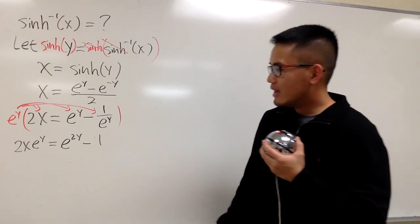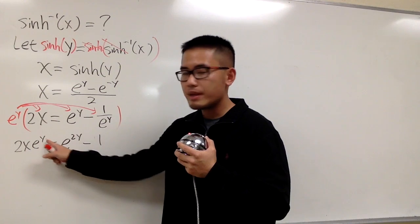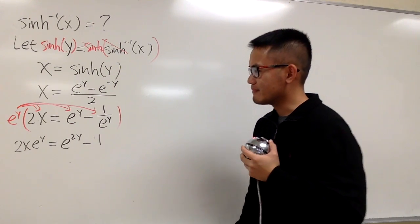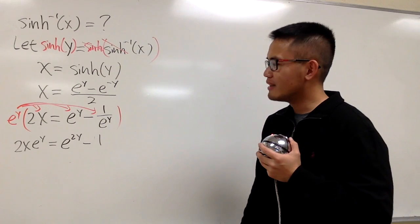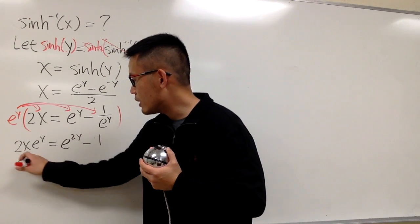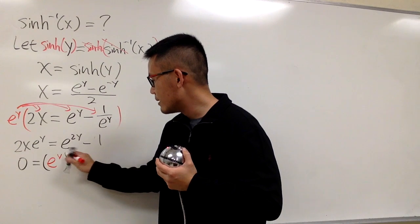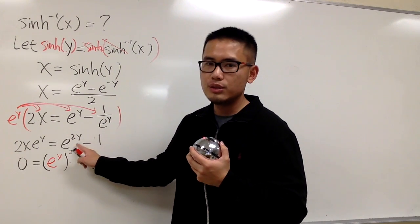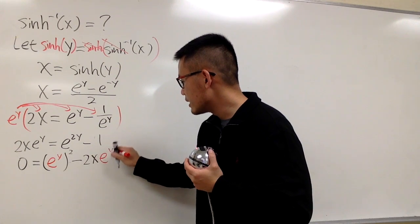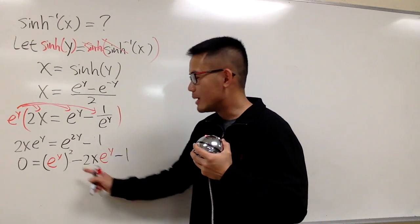Our goal is to solve for y. We have e to the y and e to the 2y, which is technically (eʸ)². That looks like a quadratic equation. Let's move terms to set up 0 on the left-hand side: 0 equals (eʸ)² minus 2x·eʸ minus 1. This is a quadratic equation in terms of eʸ — you have the square term, the linear term, and the constant.